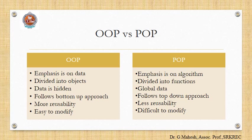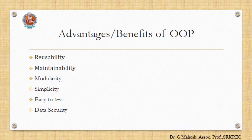OOPS is easy to modify, but procedure-oriented programming is difficult to modify. The first advantage of object-oriented programming is reusability. Due to inheritance, you can use the same class structure in different classes that are inherited from it. Another reusability feature is polymorphism and operator overloading, with which the same operator can be used for different purposes.